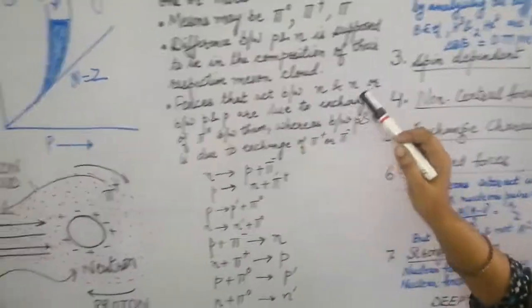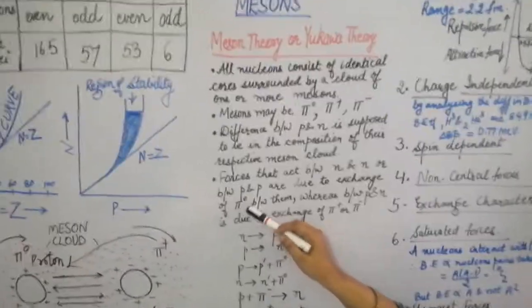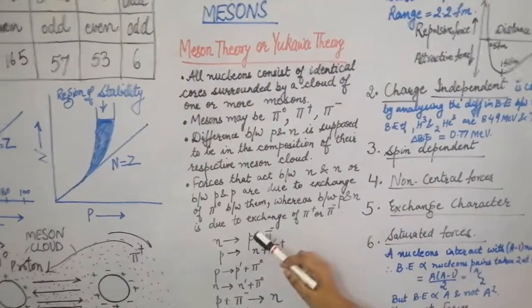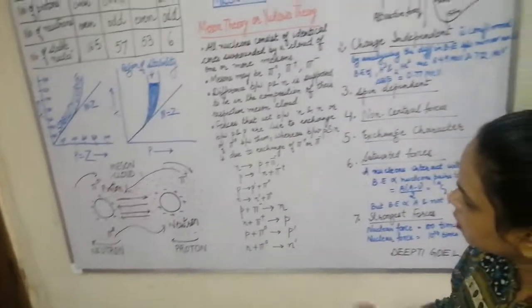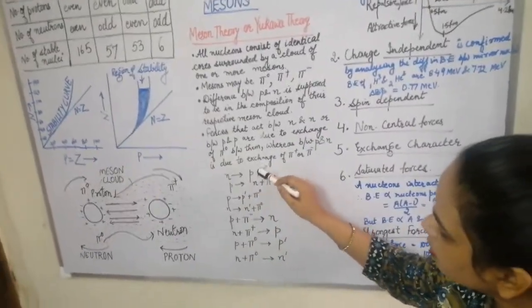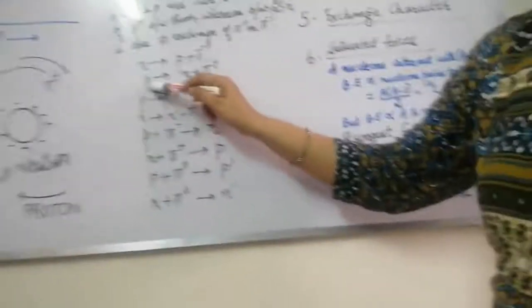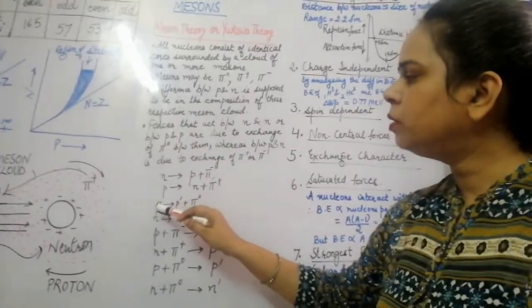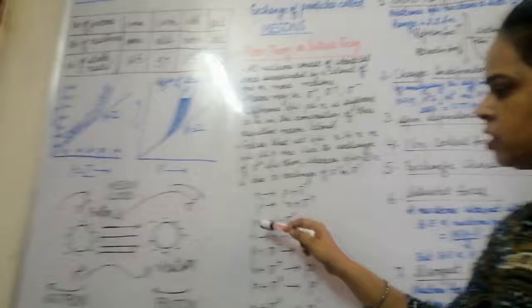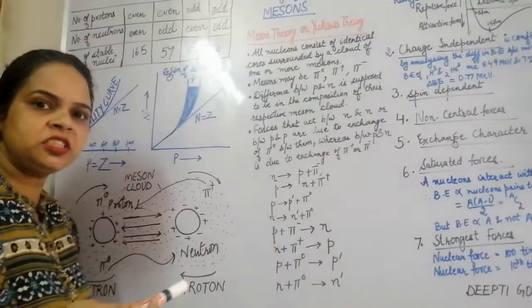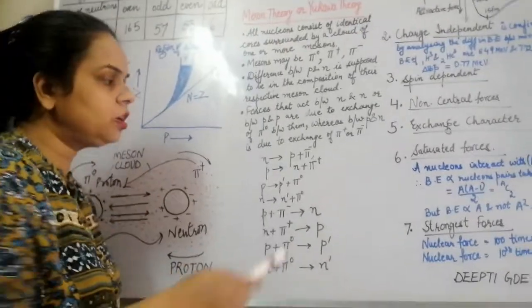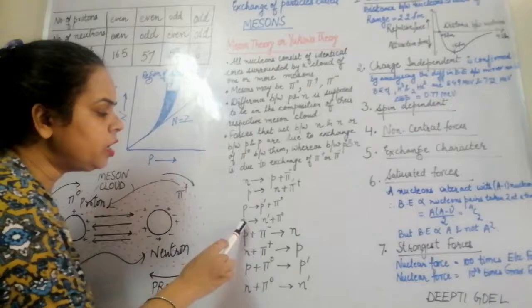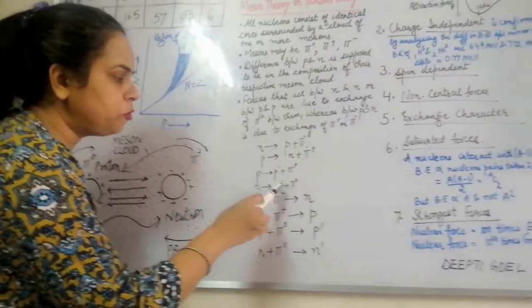The forces between neutron-neutron or proton-proton are due to the exchange of neutral pi mesons (pi naught), whereas between a proton and a neutron the exchange is due to charged pi mesons (pi positive or pi negative). A neutron becomes a proton when the proton is surrounded by pi negative, and a proton can be changed into a neutron if the neutron gets surrounded by pi positive mesons. Two protons in different excited states differ from each other by a meson cloud of pi naught.